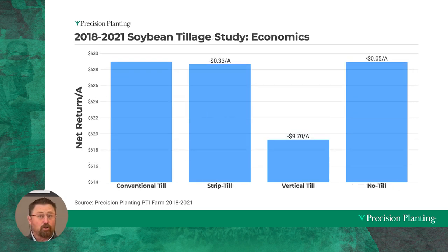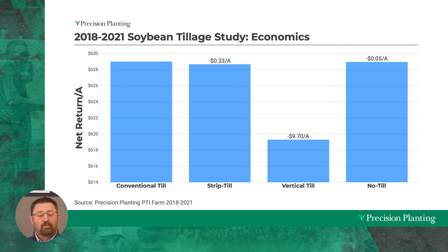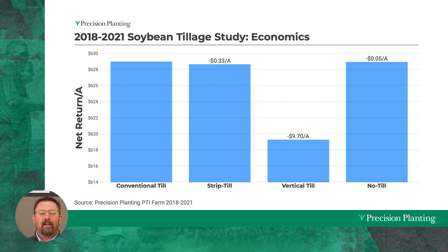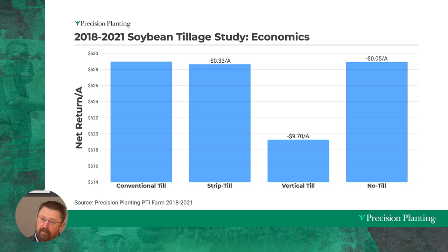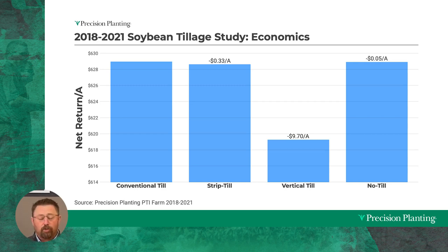Let's change gears and go to soybeans. This is where it changed a little bit — conventional till actually has the highest net returns for soybeans. But it's interesting: no-till is within a nickel of conventional till, and I look at the long-term soil health advantages of no-till — not doing that major tillage — and being within a nickel of that aggressive tillage is a huge advantage for no-till. Strip till is only 33 cents different compared to conventional till — give me the fertility side of things to add with strip till and this could be an explosion of benefit. Vertical till is within nine dollars and seventy cents per acre. If we use it for residue management and not all-out tillage, I think we're going to be better off with that type of system.